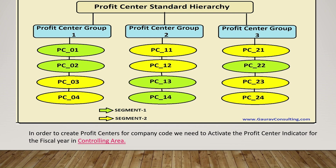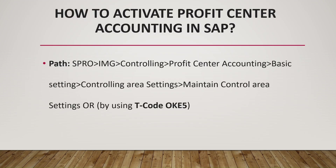To activate profit center accounting in SAP, we can use T-code OKE5, or we can follow the path visible on screen: starting from SPRO, then IMG. From IMG, select Controlling, then Profit Center Accounting, then Basic Settings, then Controlling Area Settings, then Maintain Control Area Settings. In this way the profit centers are activated in SAP.